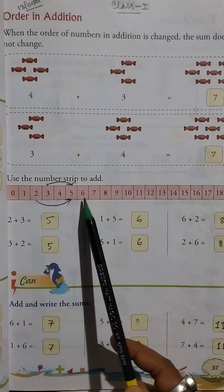...plus 5 equals 6. So 1 here: 1, 2, 3, 4, 5. So 1 plus 5 equals 6, and 5 plus 1 equals 6, same. Then 6 plus 2 equals 8: 6, 7, 8.